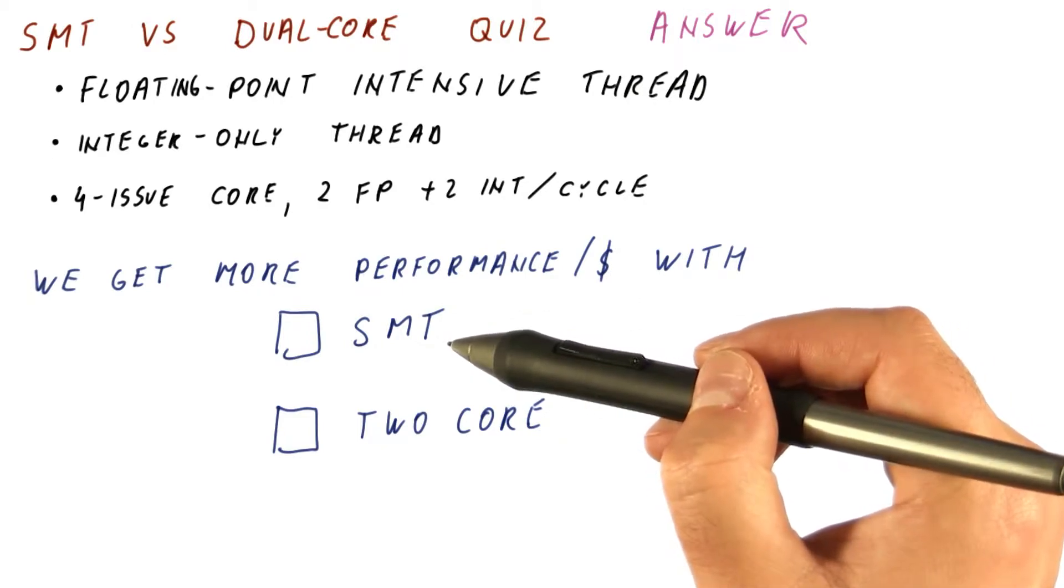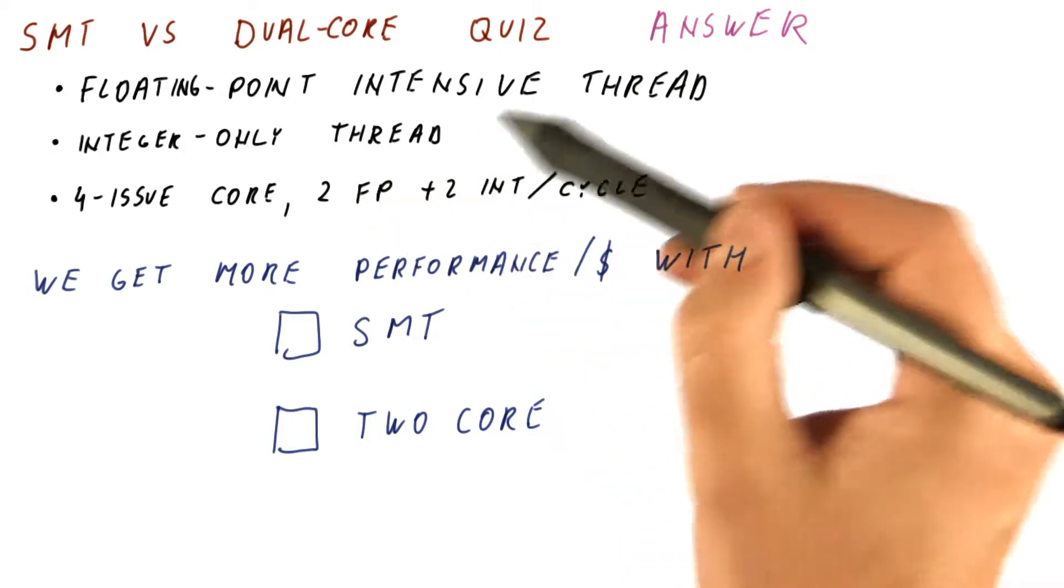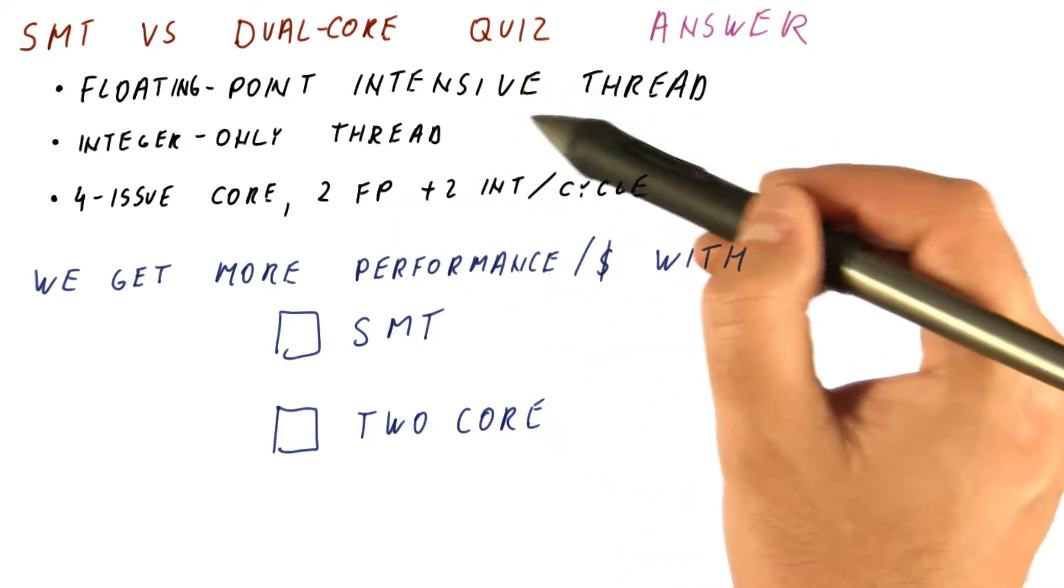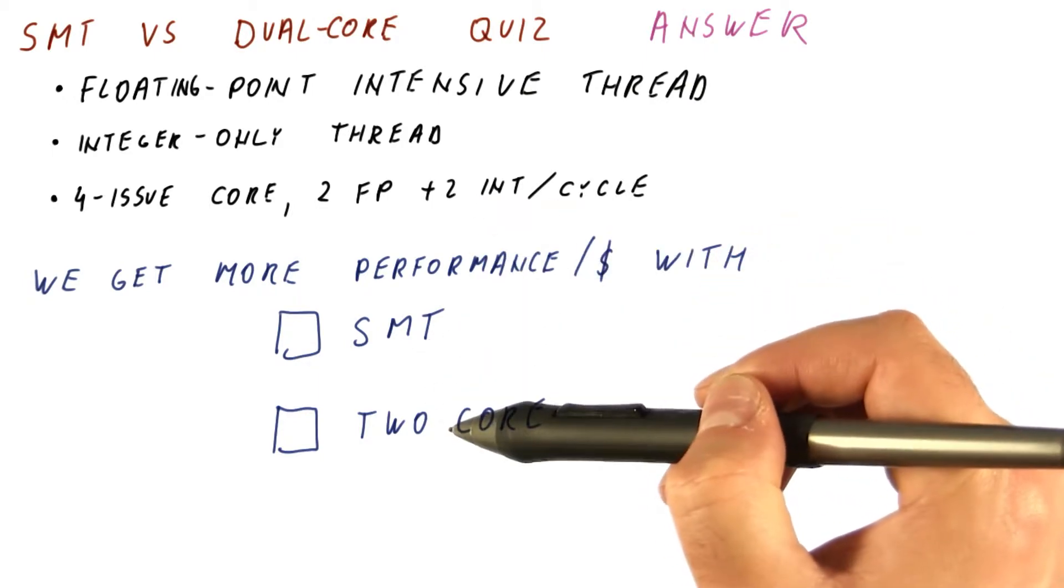In SMT, however, we would be able to do two instructions from this thread and two instructions from this thread per cycle. So we get very similar performance.